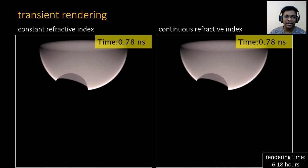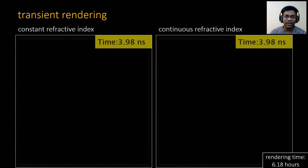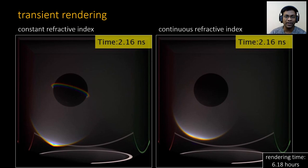Our formulation can easily be extended to time of flight cameras. The time of travel here accounts for the change in the speed of light due to the varying refractive index. The spheres are either made up of constant refractive index as shown on the left, or continuously varying refractive index as shown on the right.